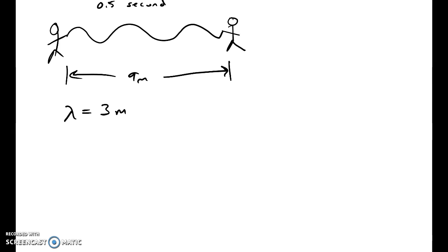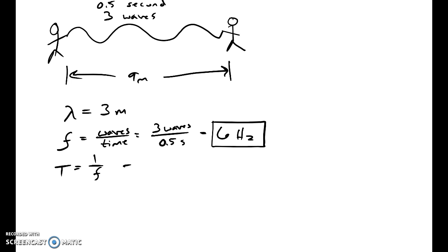So if it takes a half a second for three waves, let's look at our period and frequency. Now, frequency is the number of waves per time. So if I have three waves in 0.5 seconds, if I divide by a half, I'm going to get 6 hertz. So I have a frequency of 6 hertz, and the period is 1 over the frequency, or the time per wave, half over 3. So that's going to be 1 sixth of a second. It's going to take a sixth of a second for one wave to go by.